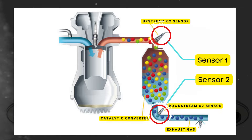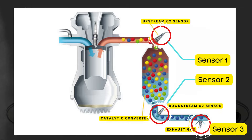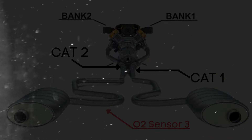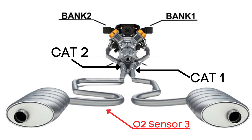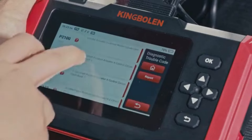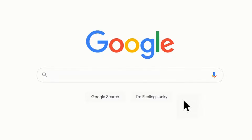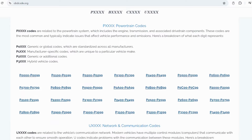In some cases, there might even be a third oxygen sensor further downstream, positioned after sensor 2. So when we talk about bank 2 sensor 3, we're focusing on the third oxygen sensor that's downstream from the engine on bank 2. If you want to read more about any other OBD2 codes, you can visit our website obdcode.org for a full list of codes and their meanings.